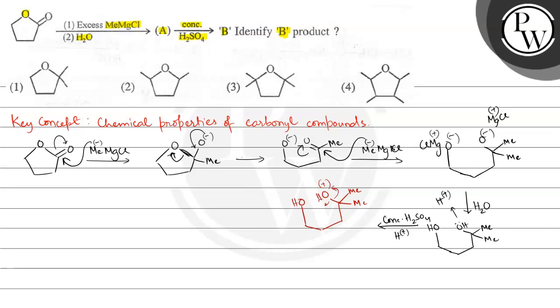Now this OH2 plus is a good leaving group, so it will leave and we will get a carbocation. Minus H2O and we will get this: OH and two methyl groups present here, and here a positive charge.